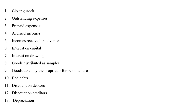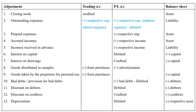Before treating these adjustments, I want to clarify one important point. Whatever adjustment is given in the question, that adjustment will appear twice in your answer — it will appear either in the trading account and balance sheet, or in the P&L account and balance sheet. So every adjustment will have two effects. This table shows how to treat each adjustment, and you will understand it better by the end of this video.